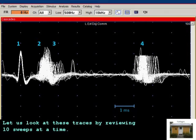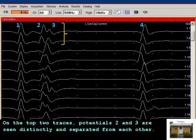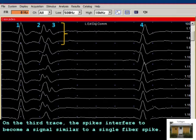Let us look at these traces by reviewing 10 sweeps at a time. On the top two traces, potentials 2 and 3 are seen distinctly and separated from each other. On the third trace, the spikes interfere to become a signal similar to a single fiber spike.